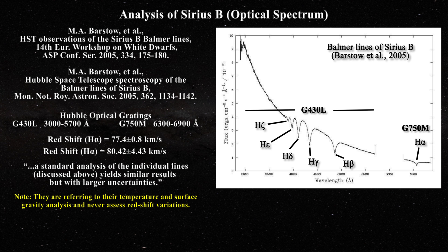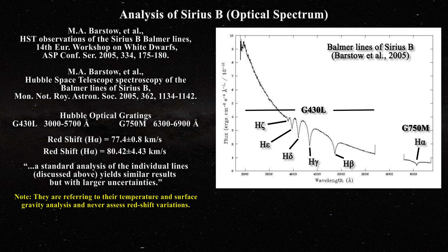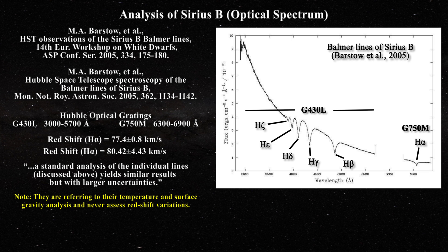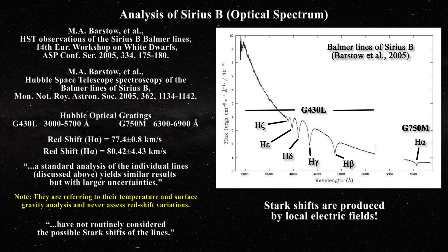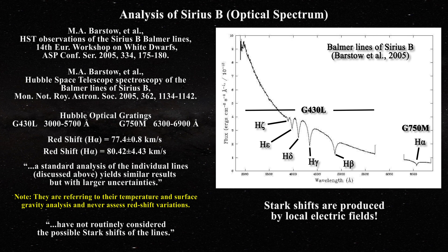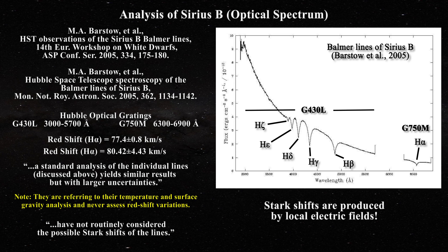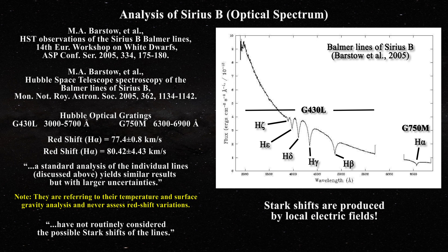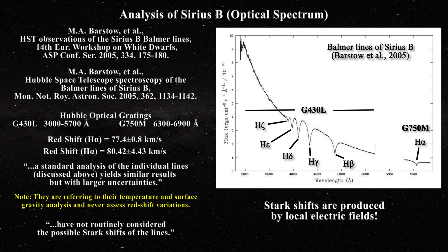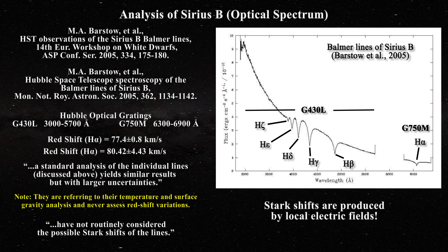However, what is most surprising is their admission that Stark shifts may be present. In the laboratory, these are redshifts caused by local electric fields. They freely admit that they have not routinely considered the possible Stark shifts of the lines. They argue that Stark shifts are highly dependent on plasma density and perform calculations assuring themselves that their contributions would be tiny. Of course, if interaction between atoms takes place in the white dwarf — which is an obvious supposition — then all redshifts of hydrogen Balmer lines do not need gravity to be explained. We will go into that more in the next video.